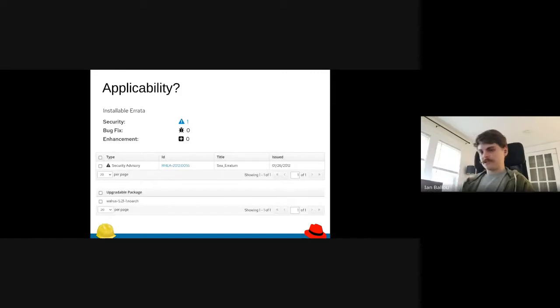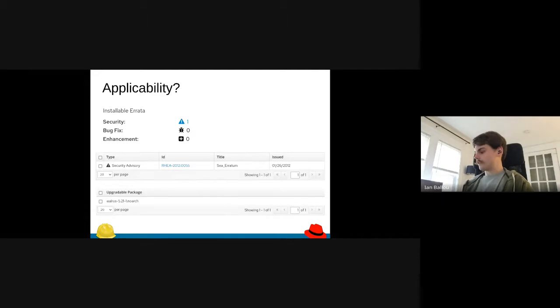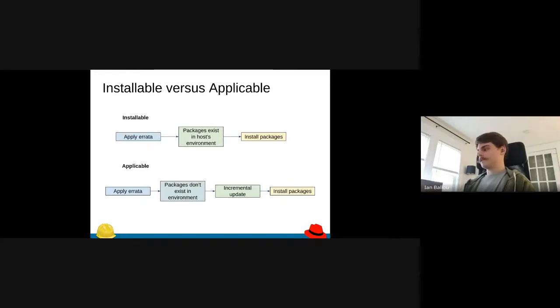Errata applicability is really driven by package applicability, which is kind of the core of applicability. Everything else sort of stems from that. You'll see something like an upgradable package on the bottom there. Right now package applicability drives errata applicability and also drives module applicability for yum content. I'm mostly going to be speaking with examples towards yum applicability because that's what I have experience with.